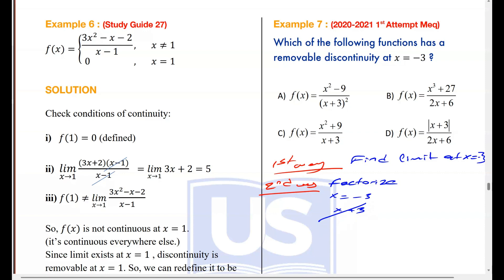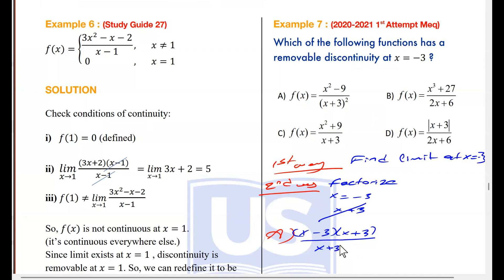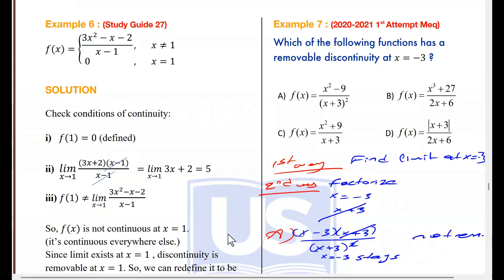Let me solve it using the second way, because I am going to factorize anyway. Option A: x squared minus 9 can be factorized as (x minus 3)(x plus 3), divided by x plus 3 squared, which is (x plus 3)(x plus 3). You cancel one x plus 3, but you still have x plus 3 at the bottom, so it can't be canceled — it is not removable. x equals negative 3 stays in the denominator, so option A is false.